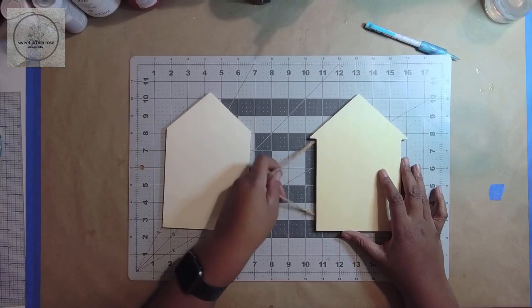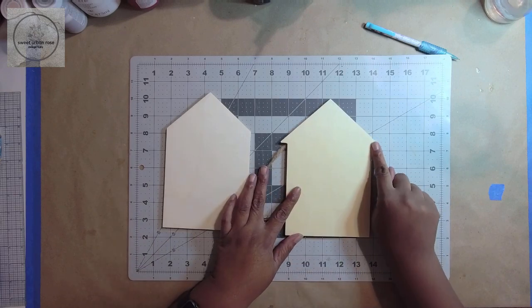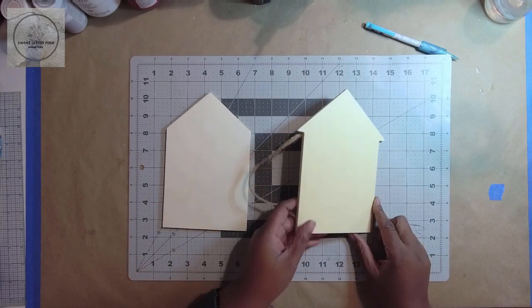I began this project by removing the twine from the crafter square arrow and trimming and sanding down what will be the new roof line.